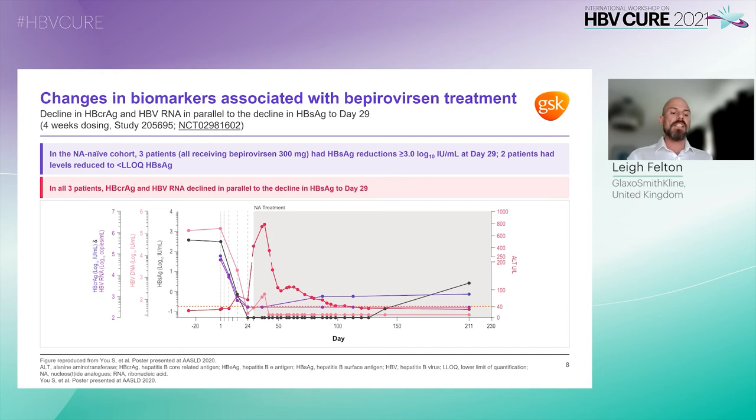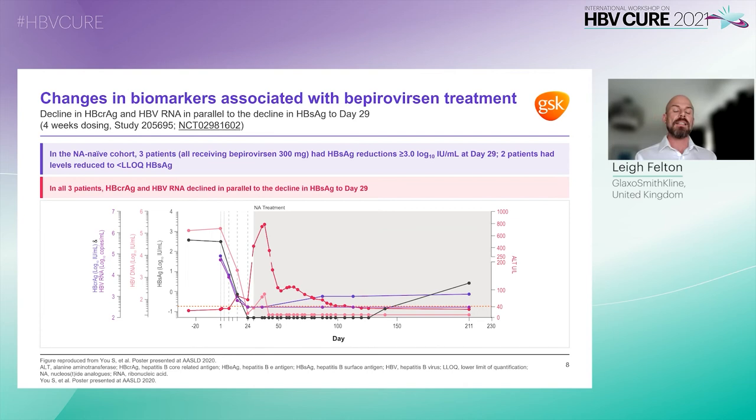In study participants on stable nucleoside analogue therapy, the majority of these patients had HBcrAg and HBV-RNA below LLOQ at baseline, implying very low levels of transcriptionally active cccDNA and indicating the majority of S antigen in these patients was derived from integrated HBV DNA. Interestingly, very low levels of HBV-RNA and HBcrAg were also reported by Roche in their phase 1b study in patients on stable nucleoside analogue therapy.